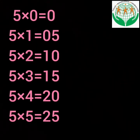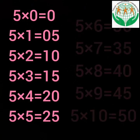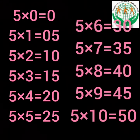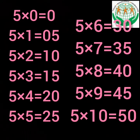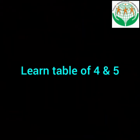5 times 0 is 0, 5 times 1 is 5, 5 times 2 is 10, 5 times 3 is 15, 5 times 4 is 20, 5 times 5 is 25, 5 times 6 is 30, 5 times 7 is 35, 5 times 8 is 40, 5 times 9 is 45, 5 times 10 is 50. All students must learn the table of 4 and 5 well.